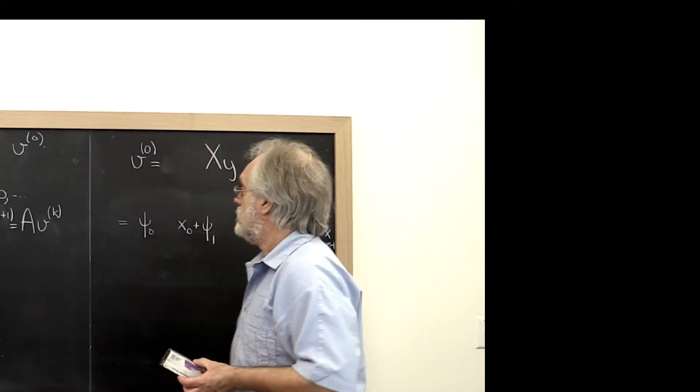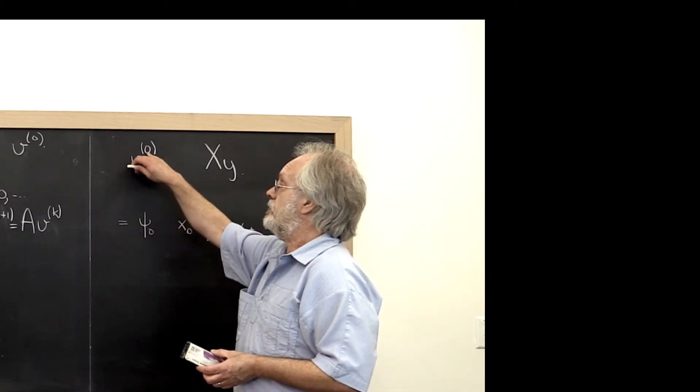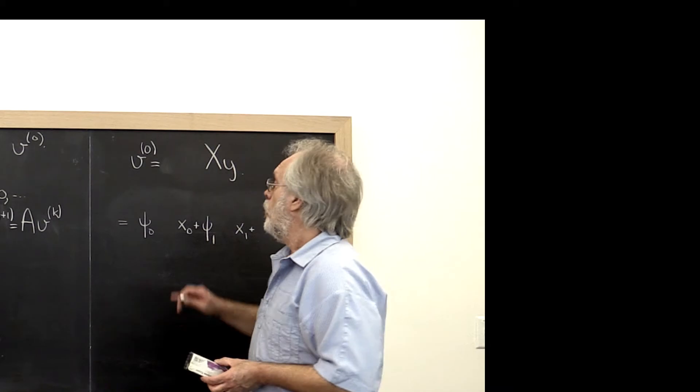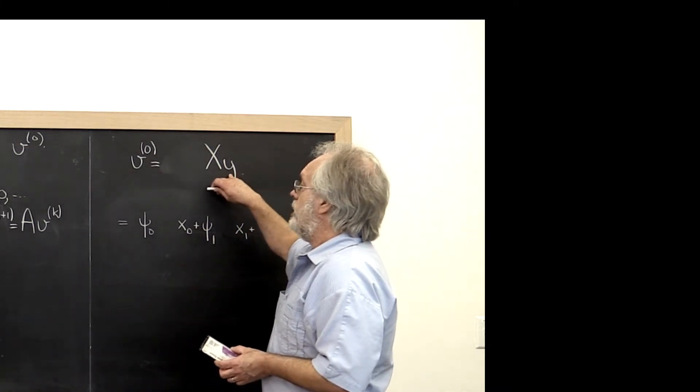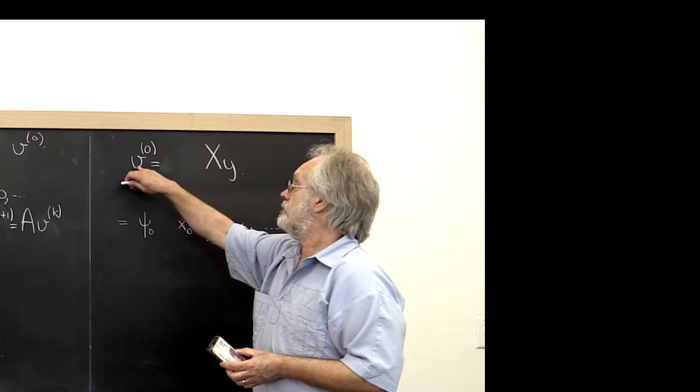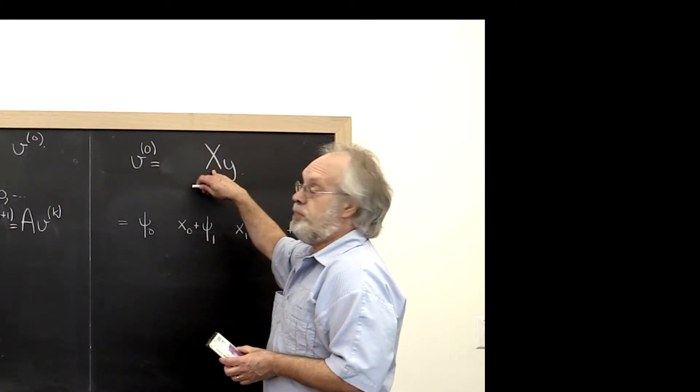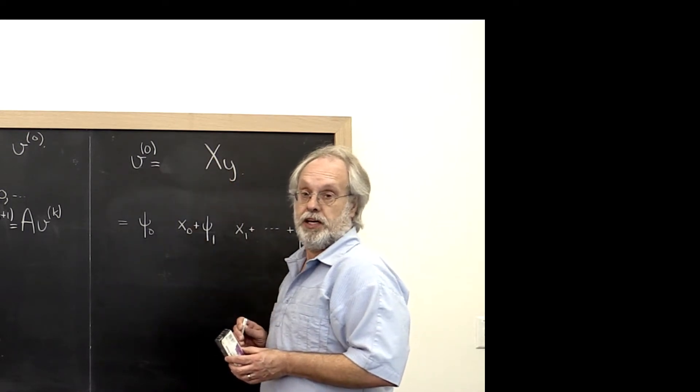So here's how the power method works. We have our initial vector v, v0. We can write that as x times vector y. What that does is it expresses our vector v in terms of the basis that are formed by the eigenvectors of matrix A.